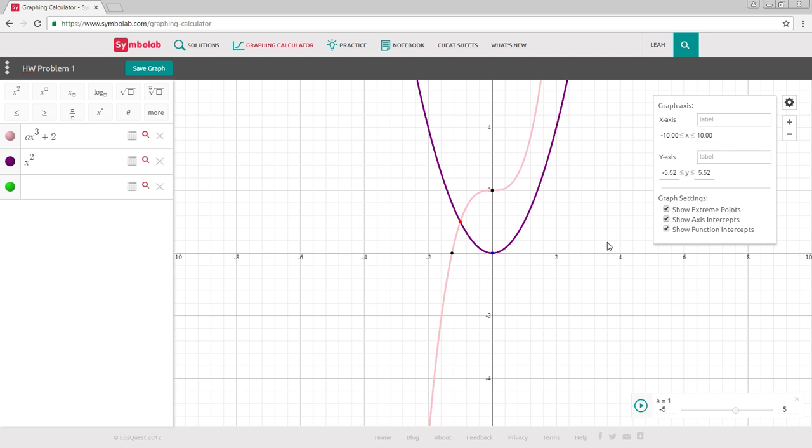Hovering your mouse over the different colored points allows you to see the coordinates and their significance. For example, by hovering the mouse over this red point, I can see that this is where the functions intersect and the point.